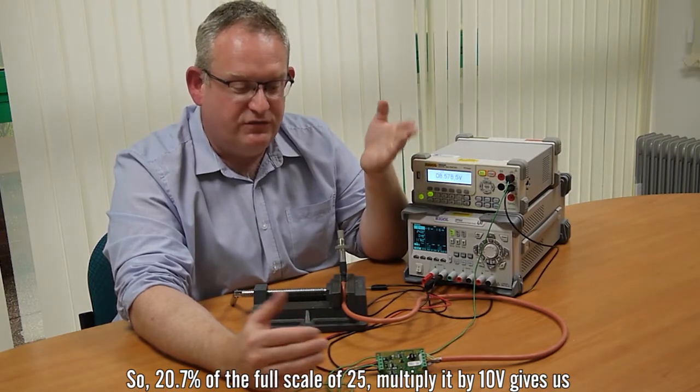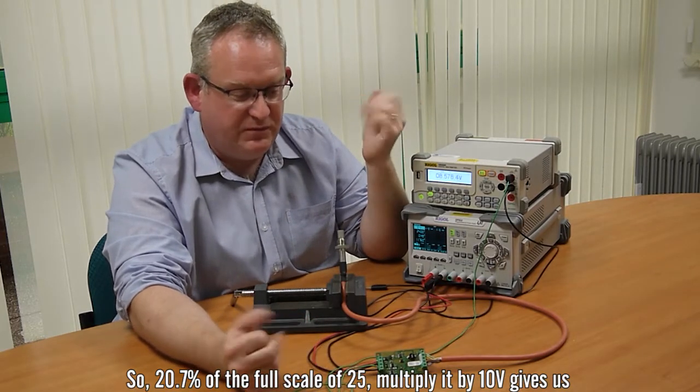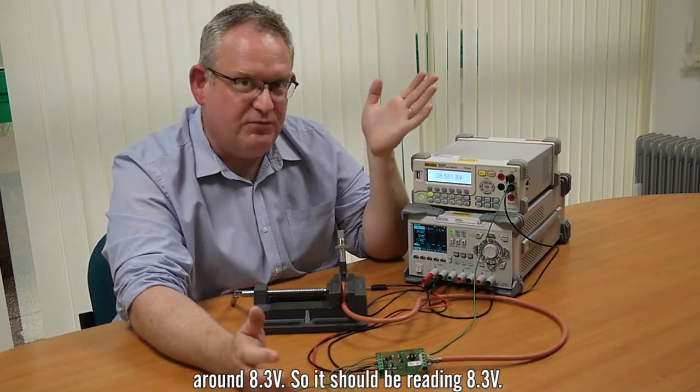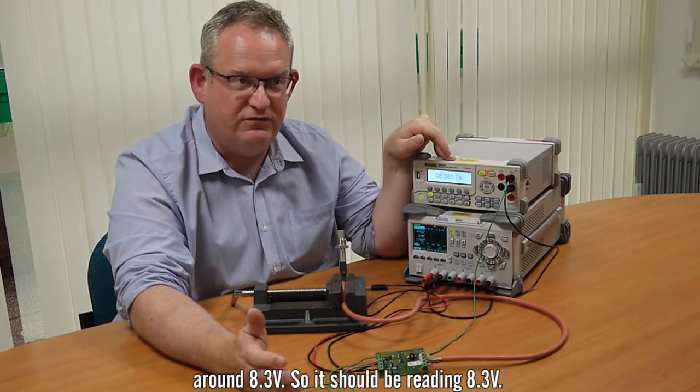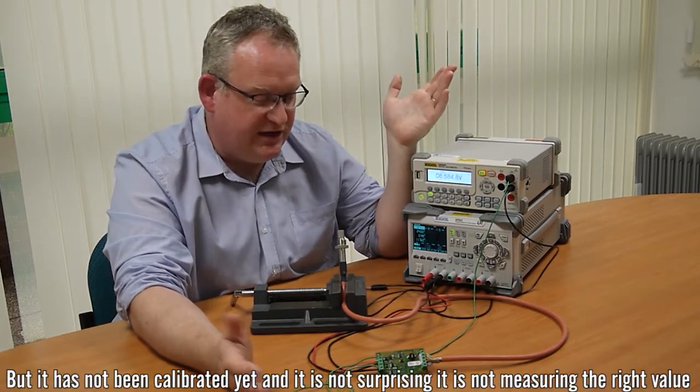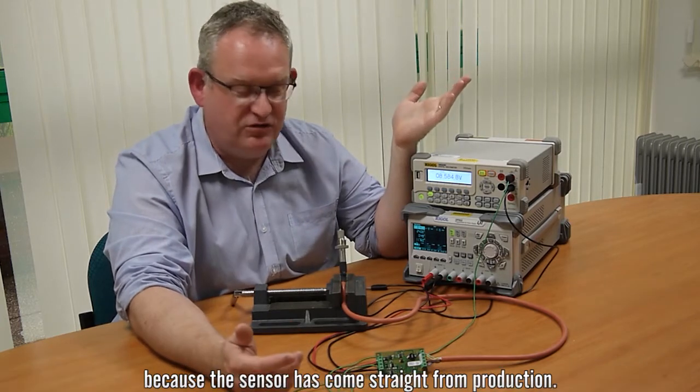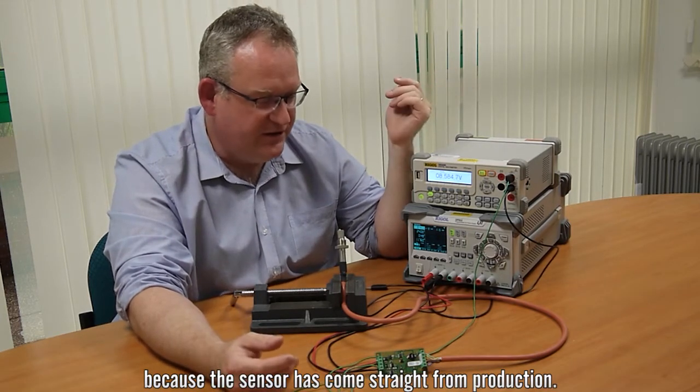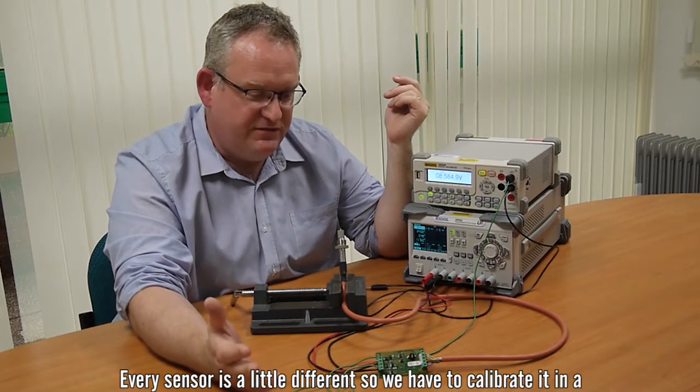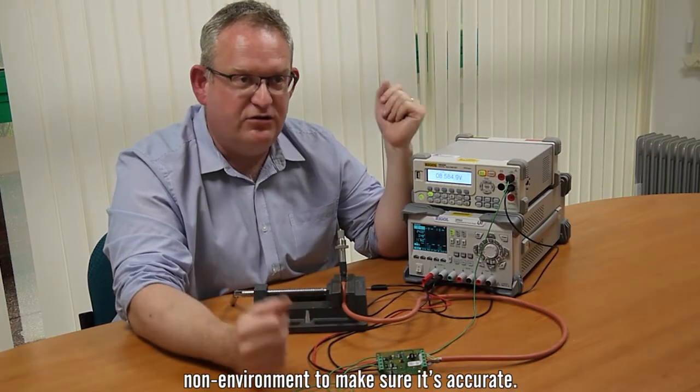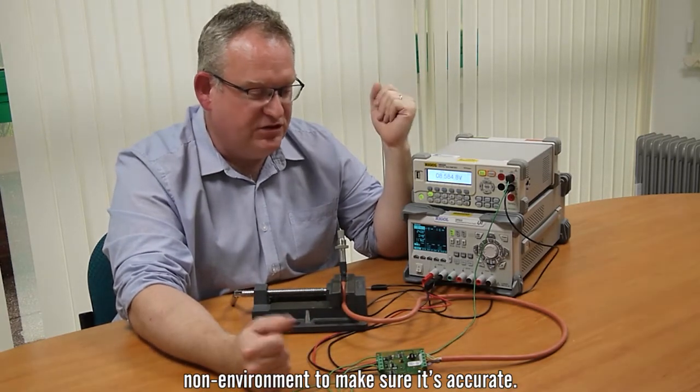So 20.7 percent of the full scale of 25 multiplied by 10 volts gives us around 8.3 volts. It should be reading 8.3 volts but it's not been calibrated yet and it's not surprising it's not measuring the right value because the sensors come straight from production.